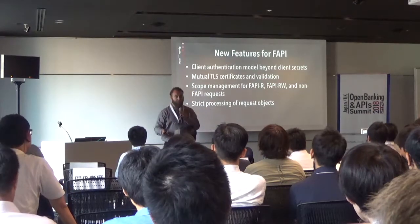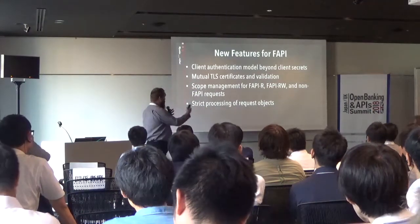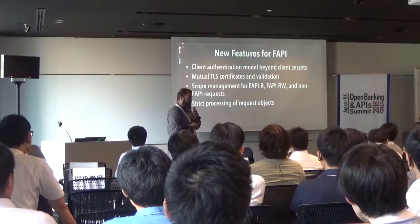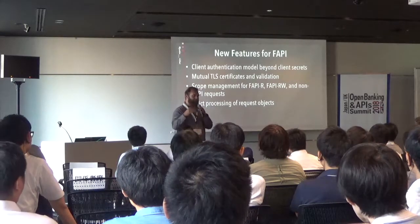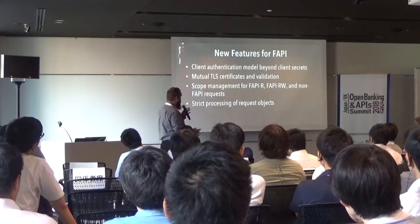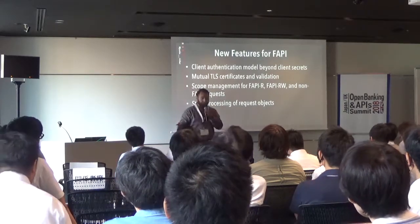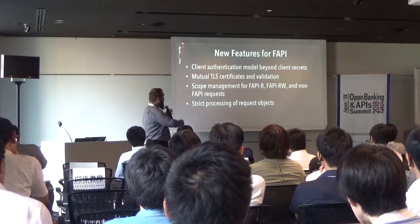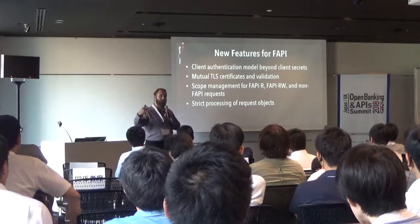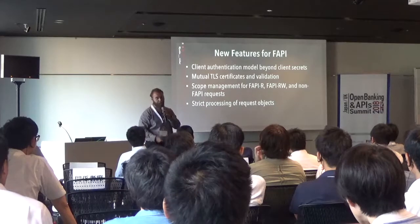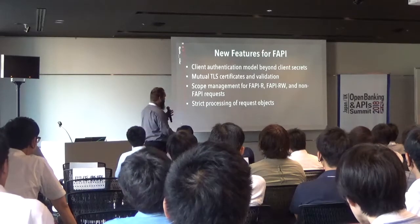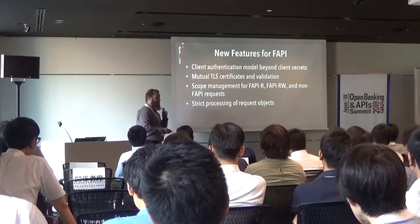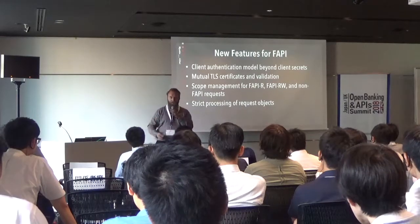That brings us to what needed to be changed for FAPI. FAPI and open banking — which are going to be merging in the near future — both add a few different requirements that the off-fleet server did not support out of the box: a more advanced client authentication model was going to be required, mutual TLS client certificates, scope management for handling read requests versus read-write requests, and some processing of request objects.